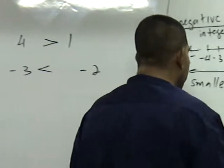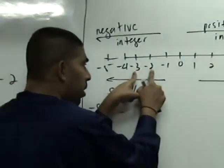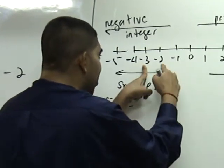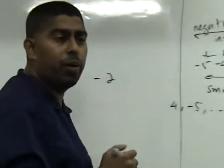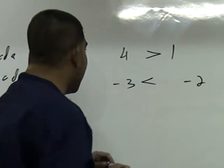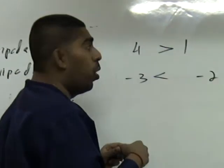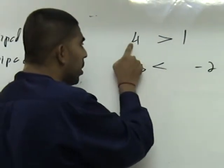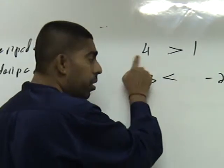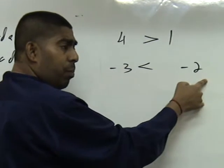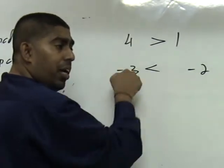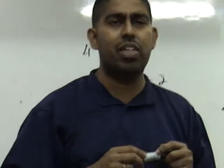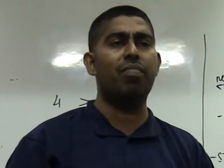Now let's take a look at the number line. Can you see negative three here? Can you see negative two here? Can you see that as I move to the left hand side, the value becomes smaller? So negative three is less than negative two. For positive numbers, the bigger the number, the bigger the value. But for negative numbers, if you compare two negative numbers, the bigger the number, the smaller the value. It is opposite to a positive number.